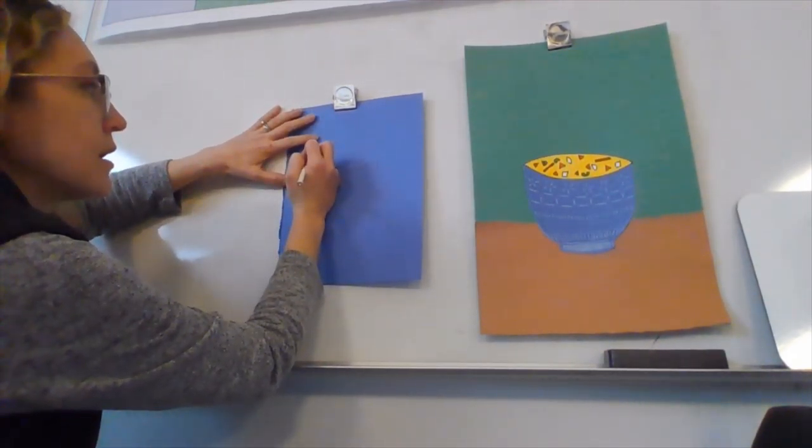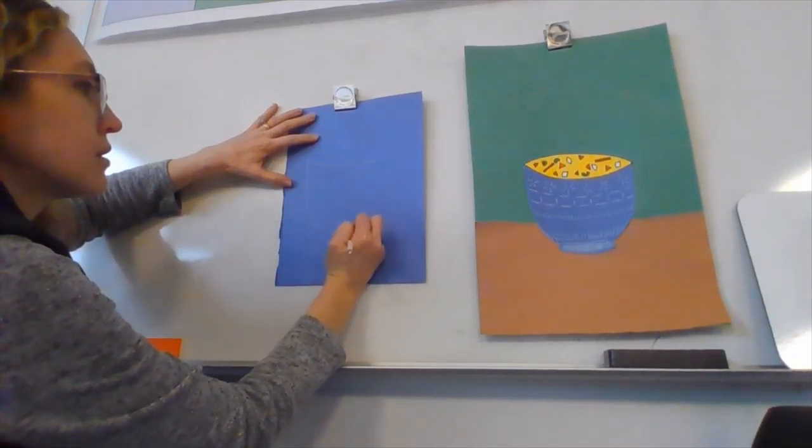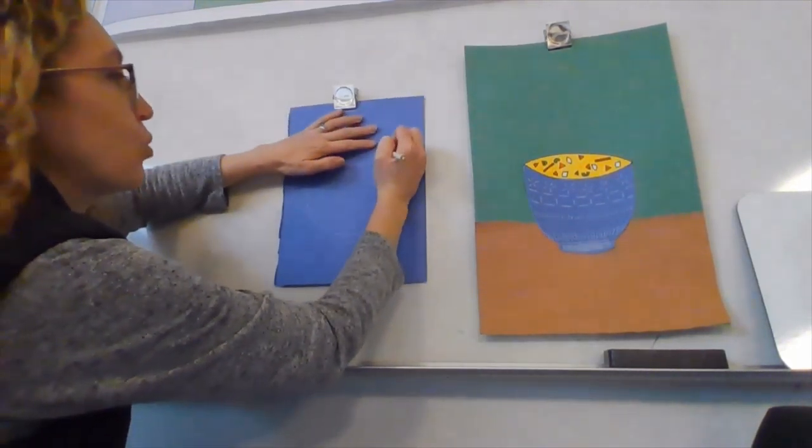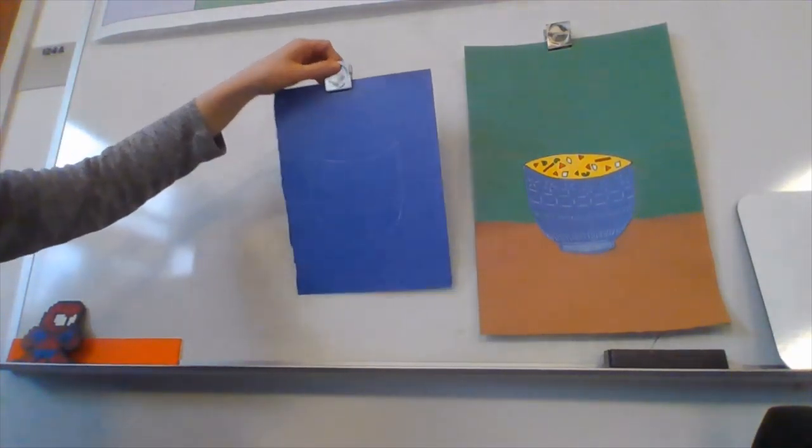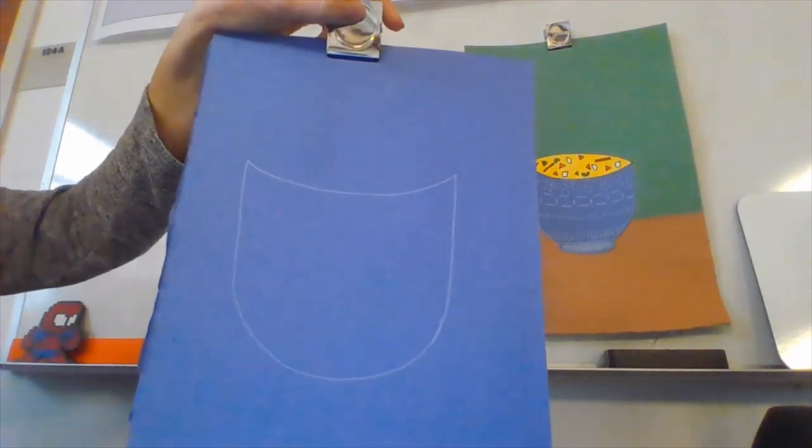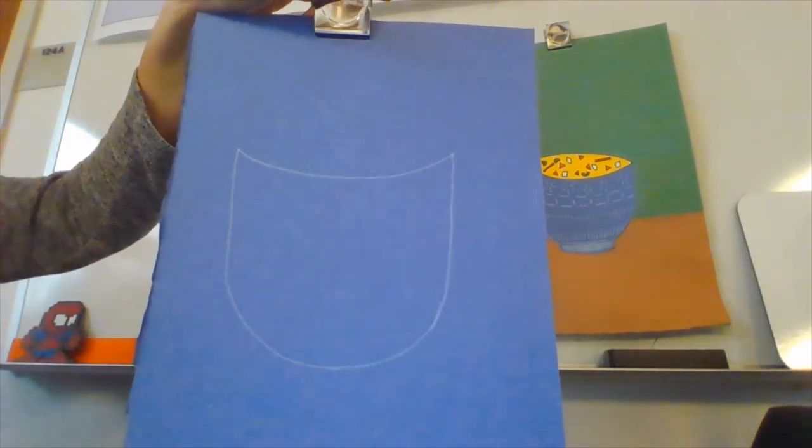Then I'm going to draw what kind of looks like a letter U shape, but it's wider. So let me show you that. If you do not have white colored pencils or white crayons and you're using other colors, that's okay too.